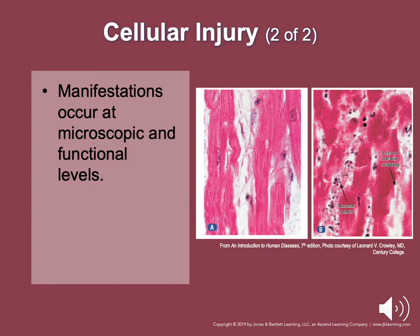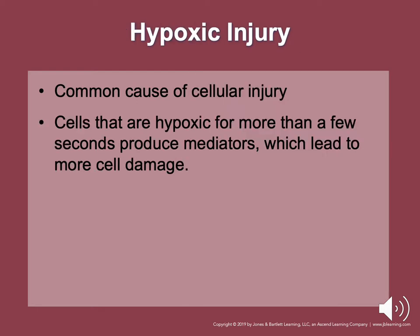Cellular injury can be repaired up to a point with proper treatment, but if you get there too late it is not repairable. Hypoxic injury is usually deadly to the cell itself. Some causes include decreased amounts of oxygen in the air, loss of hemoglobin function, and loss in the number of red blood cells. Cells that are hypoxic produce mediators which lead to more cell damage, and free radicals are the earliest and most dangerous mediators produced.